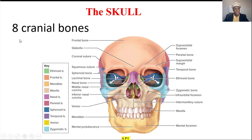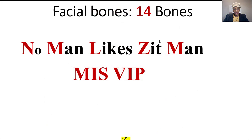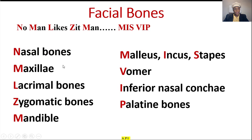Now that we know the skull has eight cranial bones, let's talk about the 14 facial bones. The mnemonic is: 'no man like zit man, miss VIP.' Nasal bones, maxilla, lacrimal bones, zygomatic bones, mandible. And then these three are called auditory ossicles: malleus, incus, stapes. Then the vomer, inferior nasal concha, palatine — VIP.